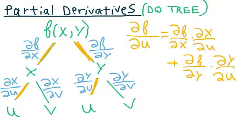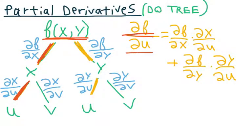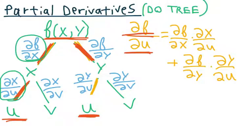By looking at this tree, if you're asked to find ∂f/∂u, you could simply take the branch from f to x and then the branch from x to u, since the top is f and the bottom is u. You're also going to do the same thing on the right: ∂f/∂y and then ∂y/∂u. What you want to do is multiply the ∂'s. To get ∂f/∂u on the left-hand side, we do ∂f/∂x times ∂x/∂u, then add ∂f/∂y times ∂y/∂u.